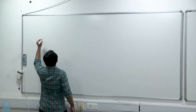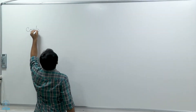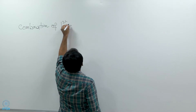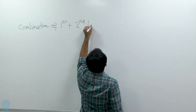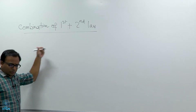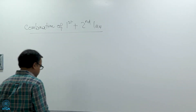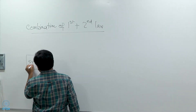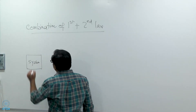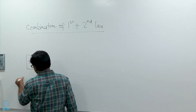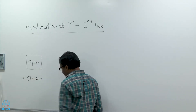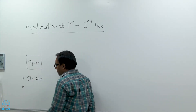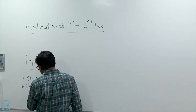Our topic today will be the combination of first plus second law. Let us consider a very simple scenario — let us take a closed system. So let us write down what are the attributes. First of all this has to be a closed system. Second, we will assume that the substance inside the system is simple, compressible, and pure.